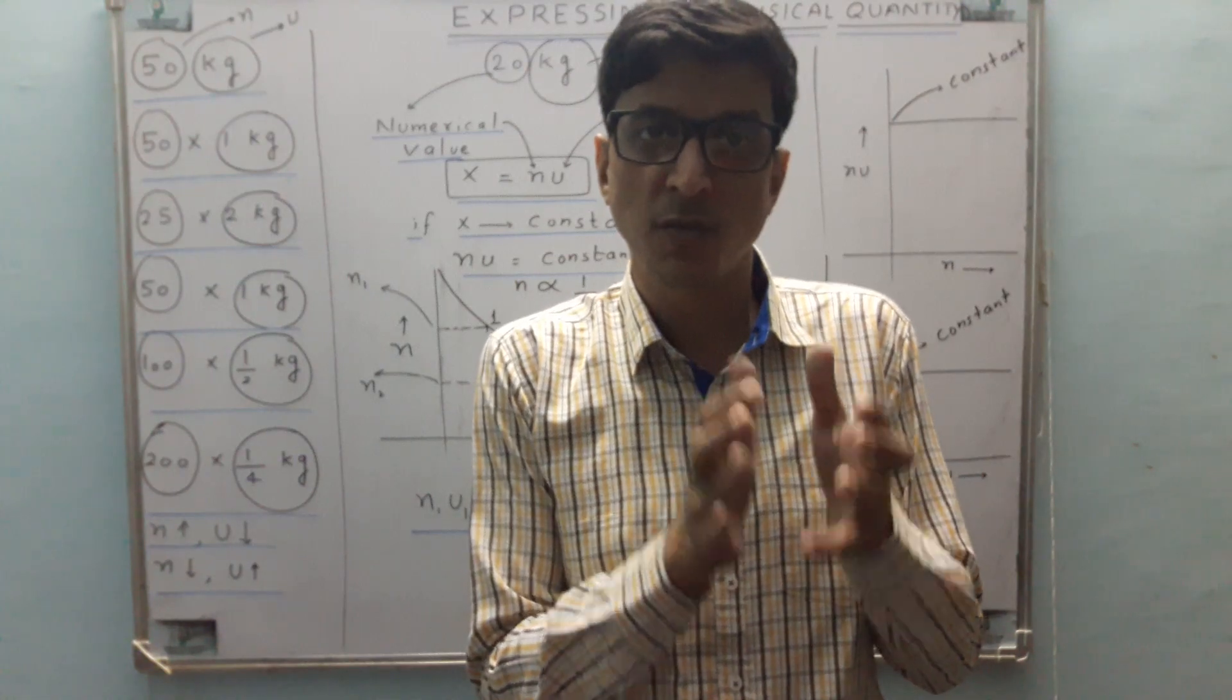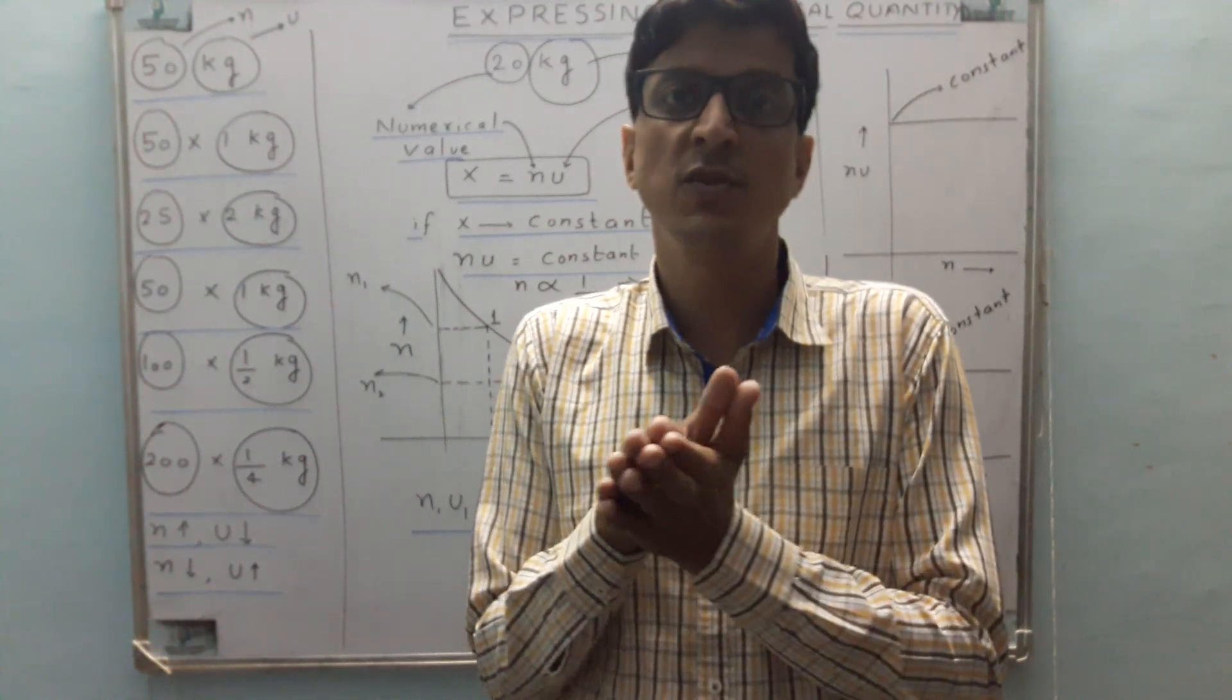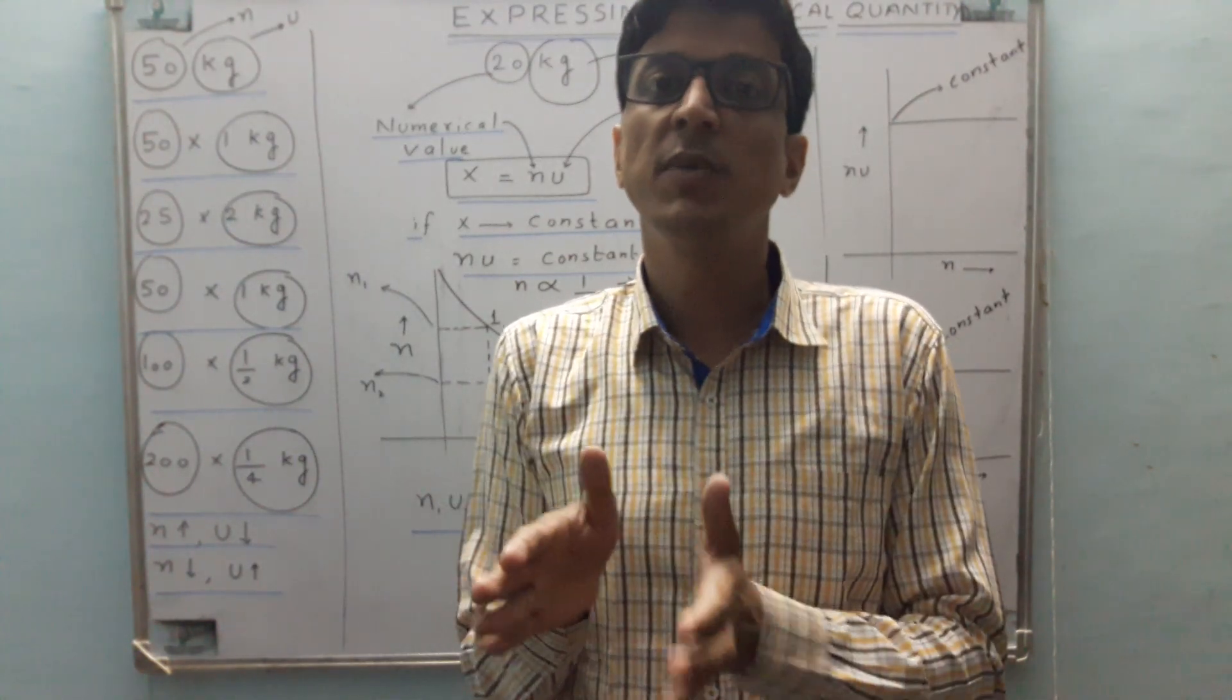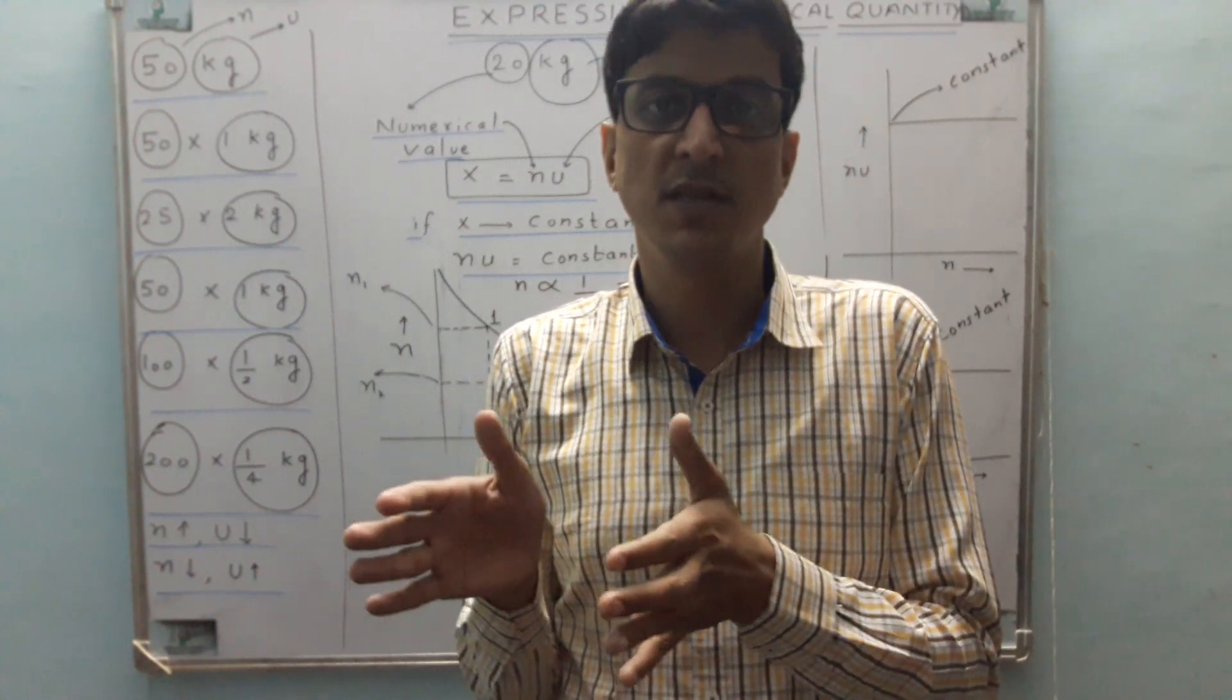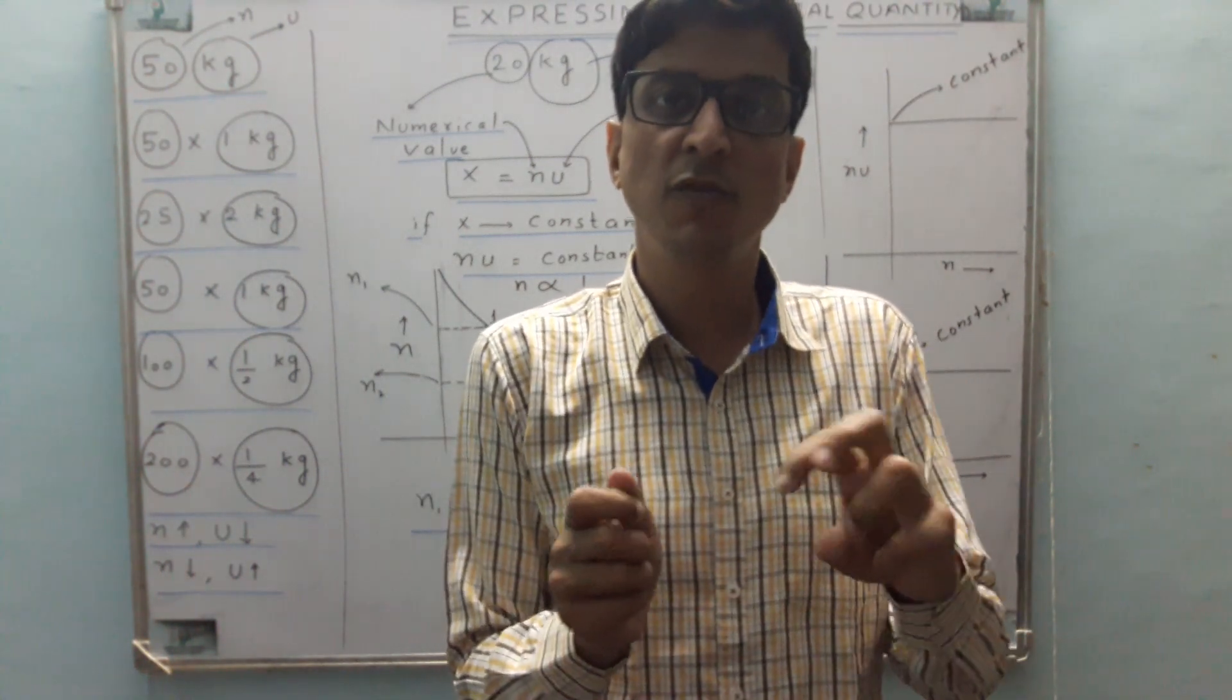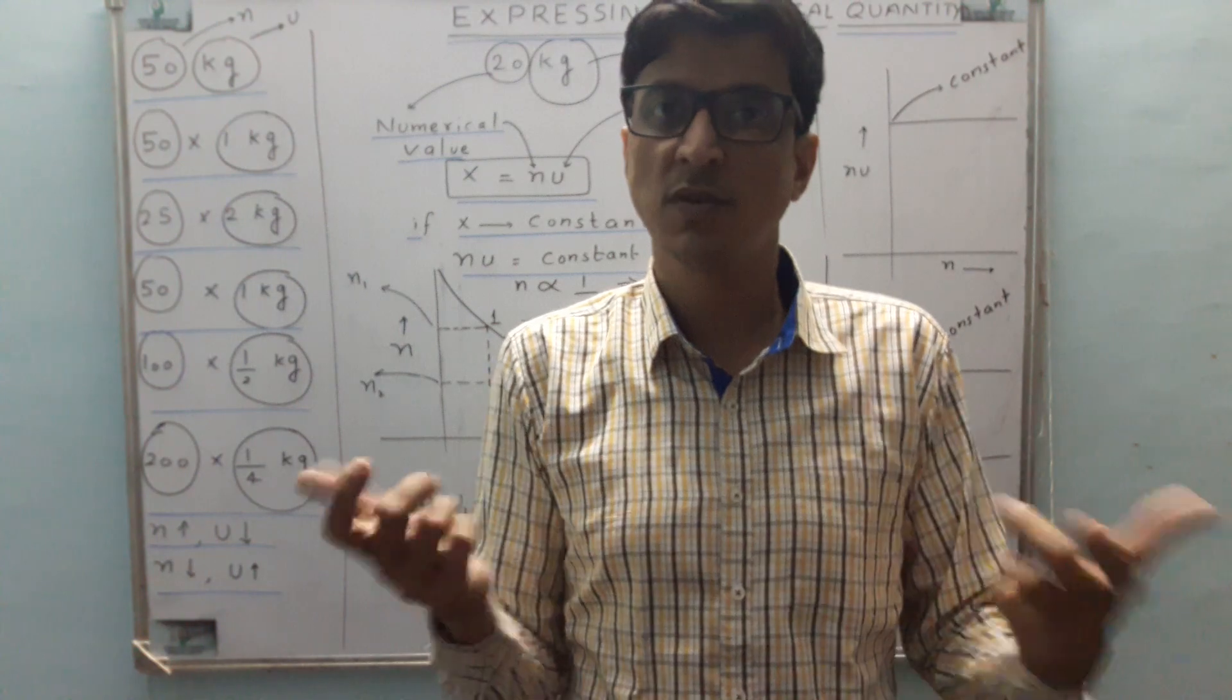expressions: the first is numerical value 50, another is a unit kg. So 50 kg can be written as 50 multiplied by 1 kg. That is, we have 50 number of 1 kg masses. So this is a simple concept.